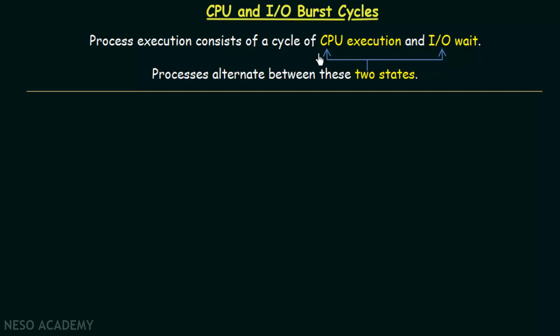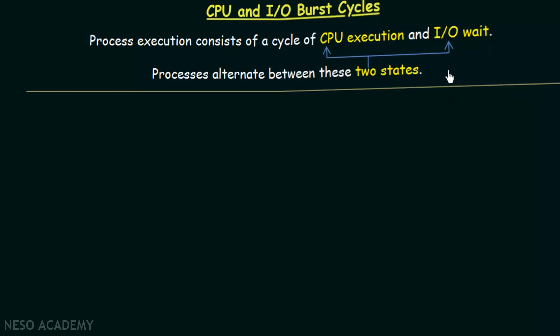When the process is under CPU execution we say that is a CPU burst, and when the process is waiting for some IO operation to complete we call it IO burst. In simple terms, CPU burst and IO burst are nothing but the time in which the process is under CPU execution and IO wait respectively. That is what we mean by CPU and IO burst.